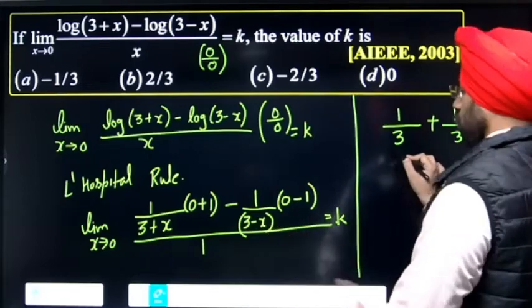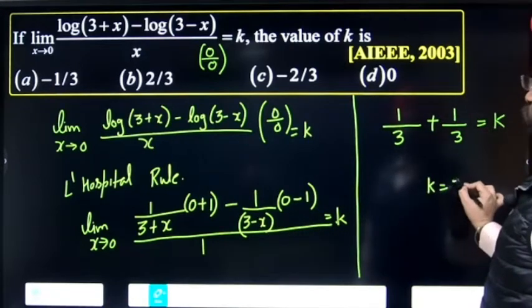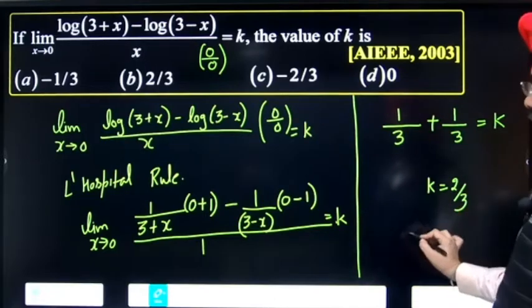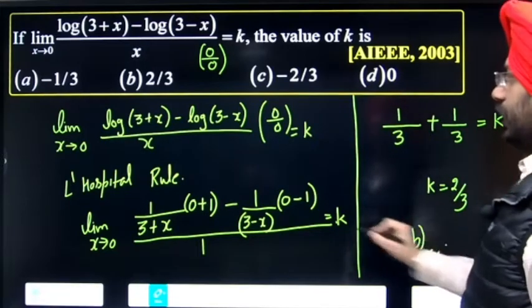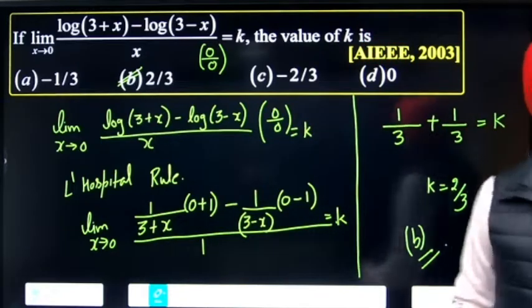The value of k is 2 by 3, which means option b. Option b is the final answer. Thank you.